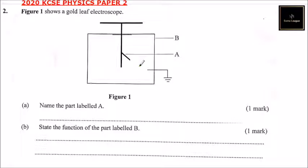We have the gold leaf, we have the earth. The electroscope is used to detect electrostatic charges. Part A of the question: name the part labeled A. So the part labeled A is gold leaf.